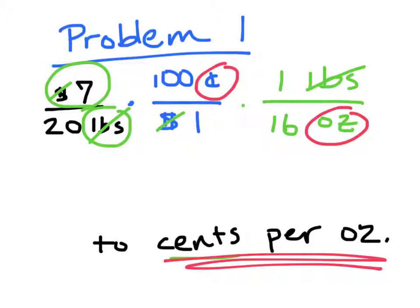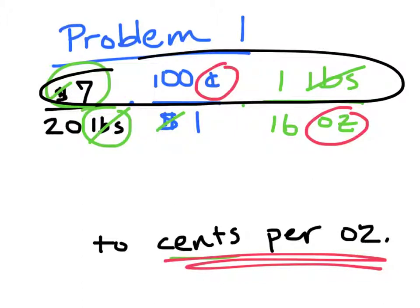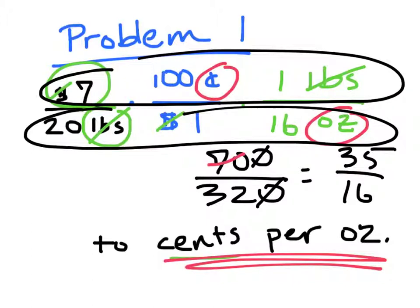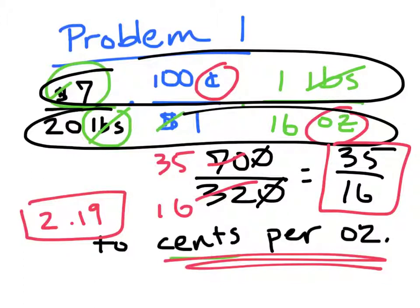The last thing to do is multiply these fractions. I multiply all the tops together. So 7 times 100 is 700 over 20 times 16 is 320. Now, simplifying this fraction, I'll cancel this zero with this zero. Now 72 out of 32 simplifies to be 35 over 16. So the answer is 35 over 16 cents per ounce. Now if you want that as a decimal, it is 2.19. I'll say it as a decimal because we're dealing with money. So 2.19 is cents per ounce.